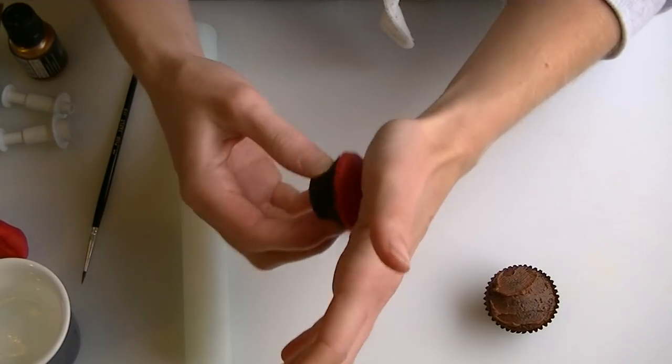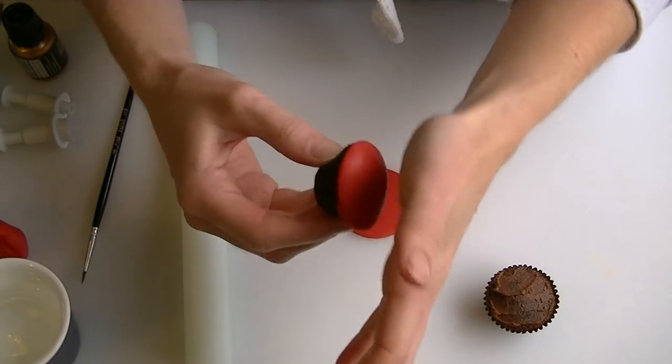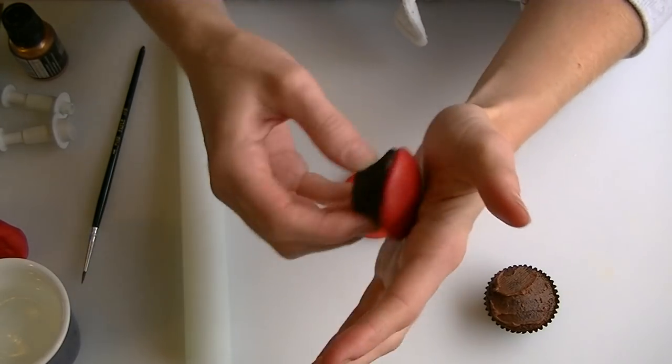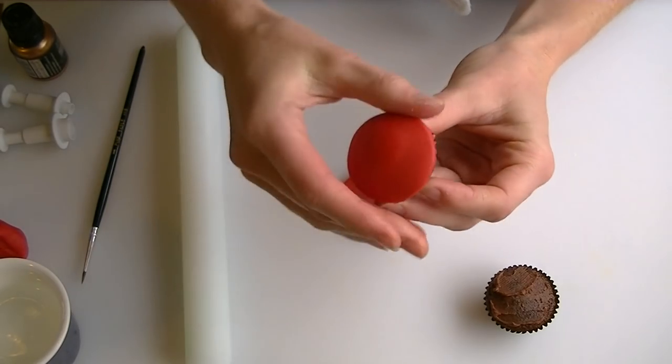Now with these ones it looks nicer if your cupcake has risen rather than flat, it's quite nice because it gives it a rounded effect. If not, you can just put a bit more buttercream on so that you can get a bit of a dome shape on the top.